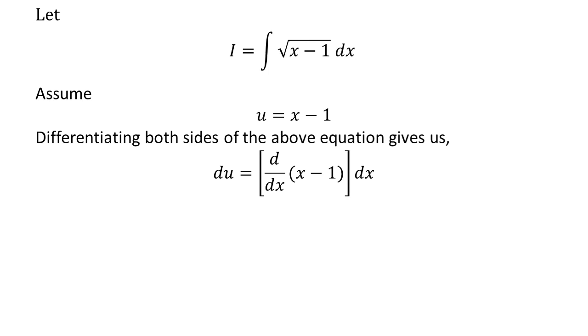Taking differential of both sides we get differential of u is equal to derivative of x minus 1 with respect to x times differential of x. Derivative of x with respect to x is equal to 1. Derivative of 1 with respect to x is equal to 0 and so differential of u is equal to differential of x.